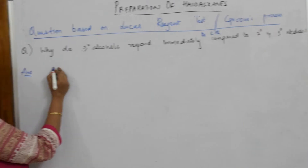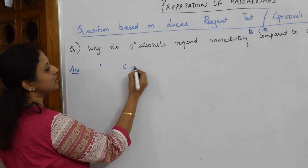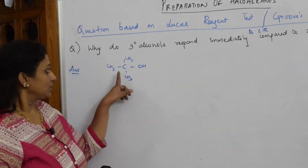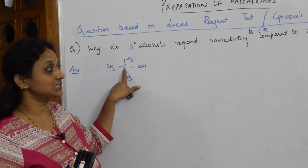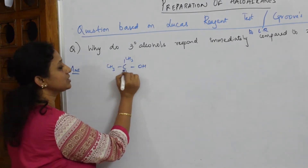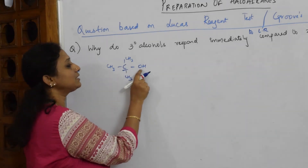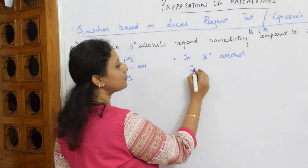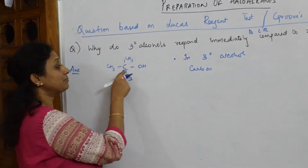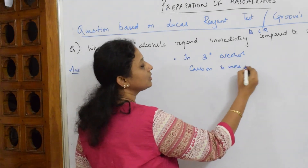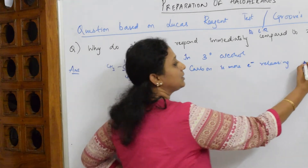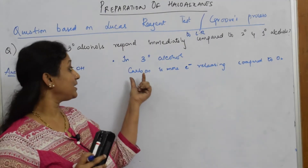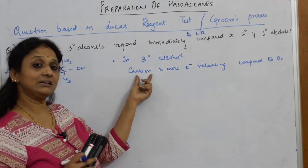Let me first draw the tertiary alcohol: a carbon with three CH3 groups and an OH. I am concentrating on this central carbon. When I compare this carbon between tertiary, secondary, and primary alcohols, the carbon atom in tertiary alcohol is more electron-releasing compared to oxygen.